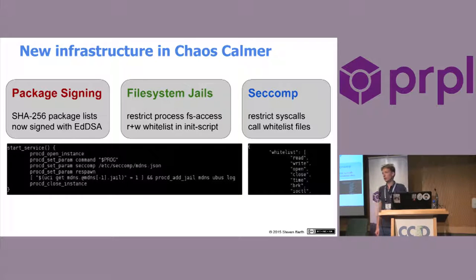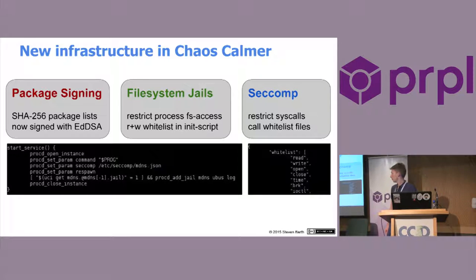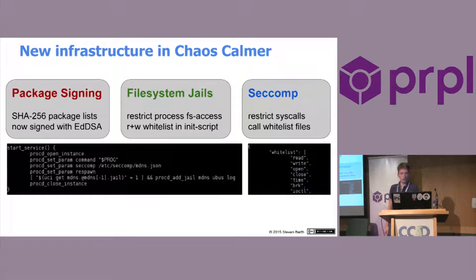We now have package signing, which is kind of a first for us. There was some initial work on package signing done in earlier releases already, but it relied on the GnuPG support in the OPKG package manager, which we didn't really use. Felix used the opportunity to use one of Bernstein's implementations of Curve 25519 and build a package list signing tool based on the ED-DSA algorithm. This is now new in the release.